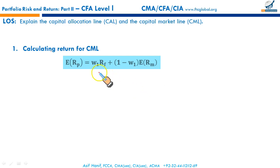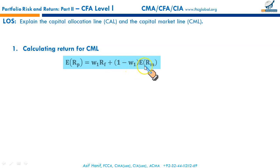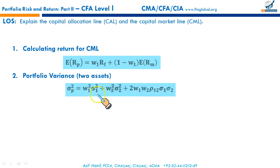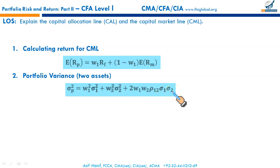Let's say if we have weight W1 of our investment in a risk-free asset, then the corresponding (1 minus W1) would be the investment in the risky asset generating return ERM. We know the portfolio variance of two assets is calculated using this formula: W1 squared times variance, plus W2 squared times variance, plus 2 times W1 times W2 times the coefficient of correlation and the standard deviations of asset one and asset two.